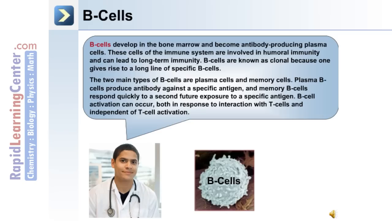B cells develop in the bone marrow and become antibody-producing plasma cells. These cells of the immune system are involved in humoral immunity, and this can lead to long-term immunity. B cells are clonal because one cell gives rise to a long line of specific B cells. The two main types of B cells are plasma cells and memory cells. Plasma B cells produce antibodies against a specific antigen, and memory B cells respond quickly to a second future exposure to a specific antigen.